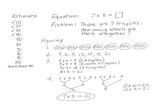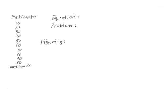I summarized what we had done. There are four parts to what we did, I said, and I pointed to each section. We read the problem, we made estimates, then wrote an equation, and then did the figuring. Now you'll each do some work on your own, I told them. I erased the work specific to the tricycle problem and left the labels for the four parts.